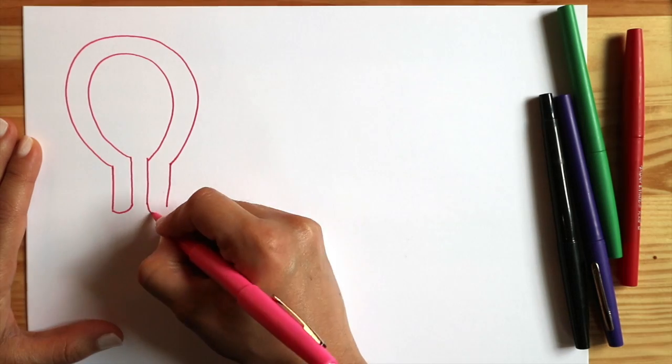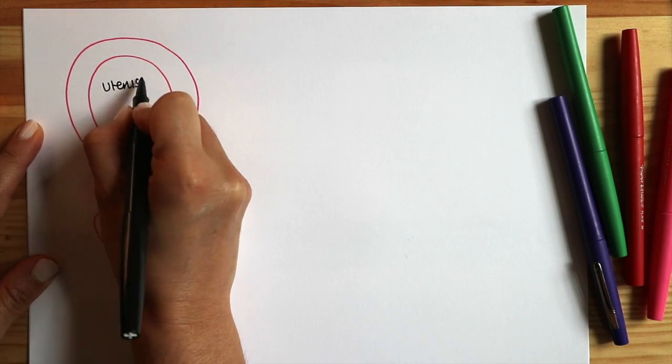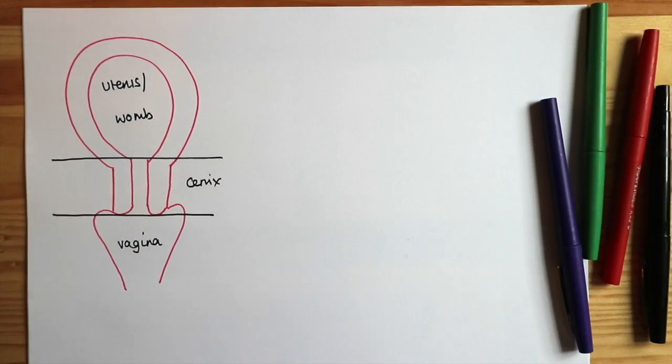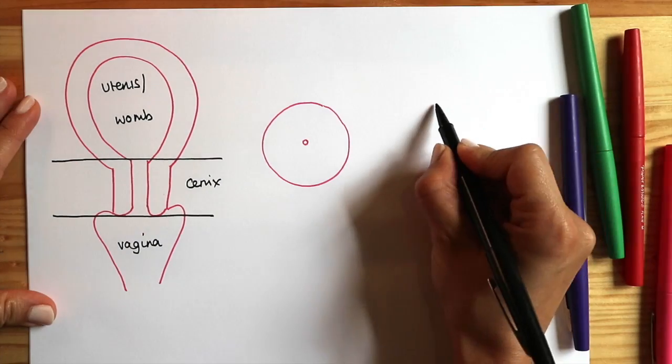Cervical screening means taking a small number of cells from the cervix, which is the neck of the womb and it's found at the top of the vagina. When we do a smear test, we're looking at the cervix end on, so it looks like this little doughnut here in the centre of the page.